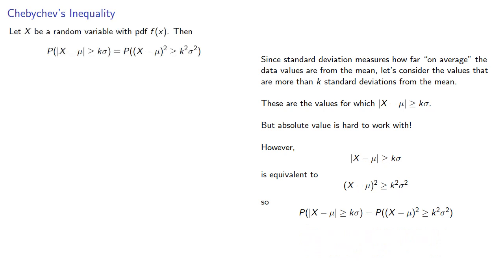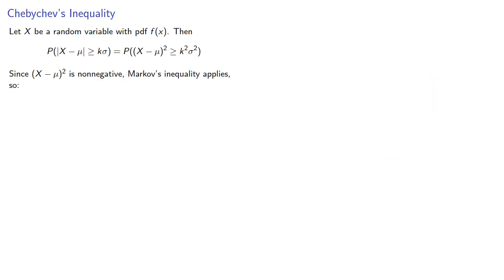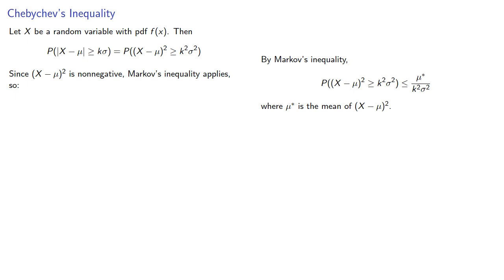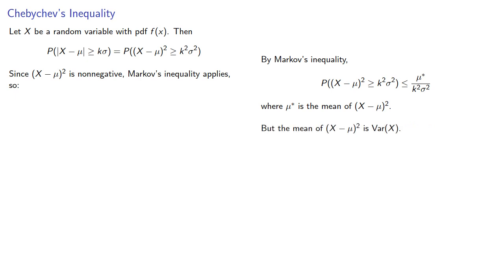So if x is a random variable — no longer required to be non-negative — with PDF f of x, then the probability that the absolute value of x minus mu is greater than or equal to k sigma is the same as the probability that the square of x minus mu is greater than or equal to k squared sigma squared. Since x minus mu squared is non-negative, Markov's inequality applies. By Markov's inequality, the probability is the mean of x minus mu squared divided by k squared sigma squared. And the mean of x minus mu squared is the variance of the random variable.